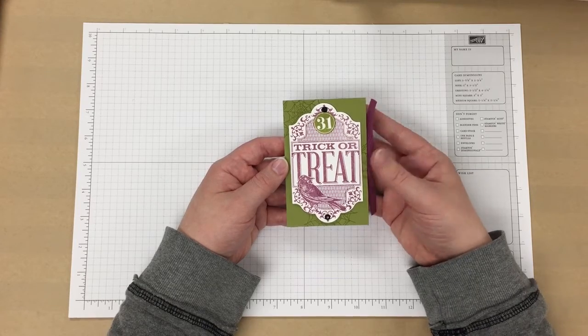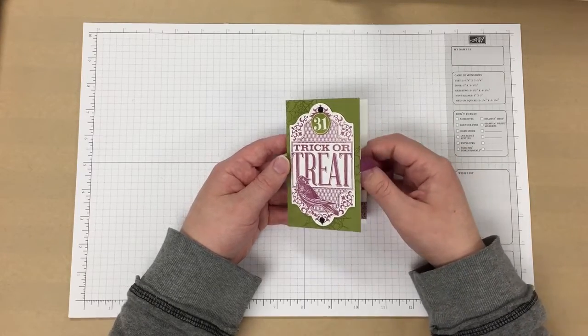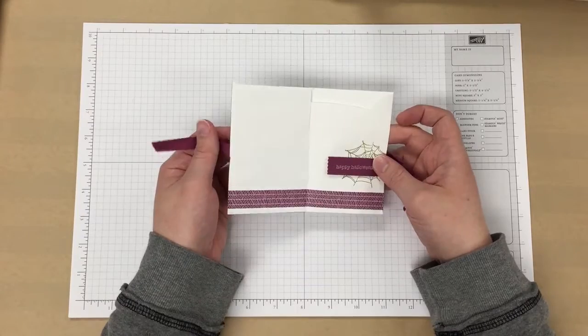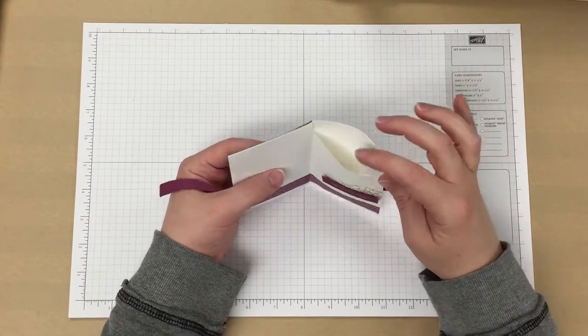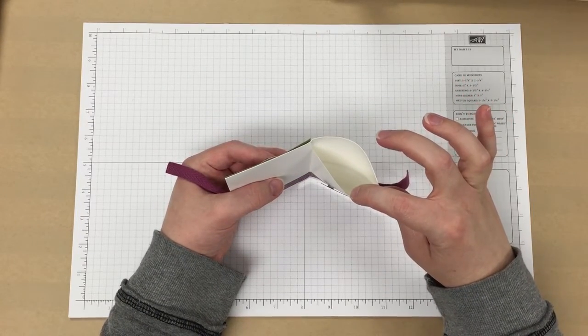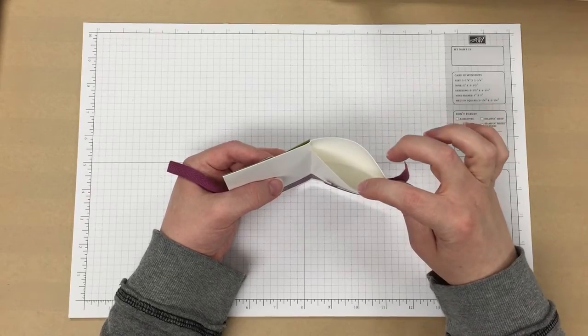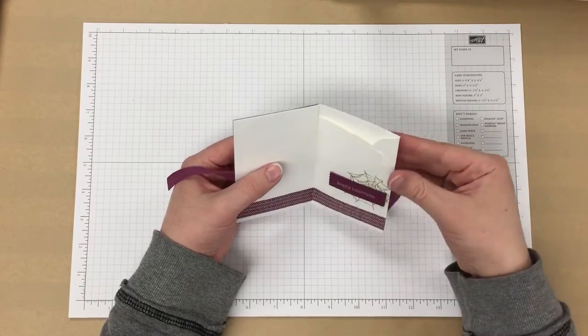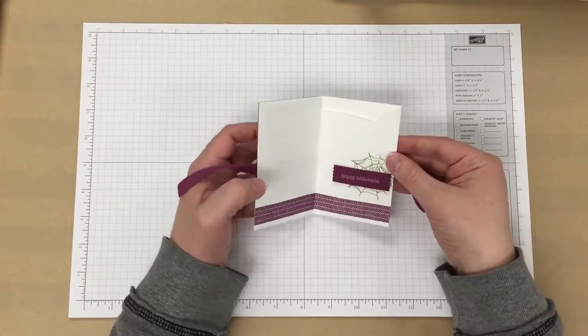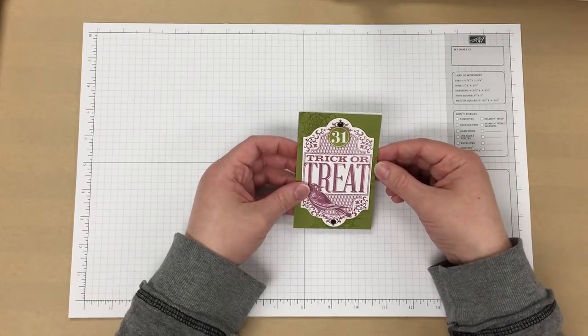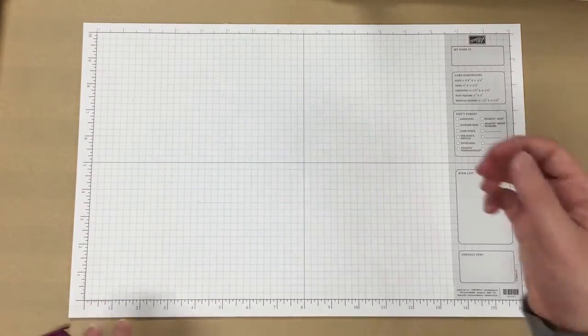Today I'm going to show you how to make this treat holder. It's made from an envelope, and this is the little pouch where you can put a small Ghirardelli chocolate or any kind of miniature candy to give as a treat at Halloween. So let's get started.